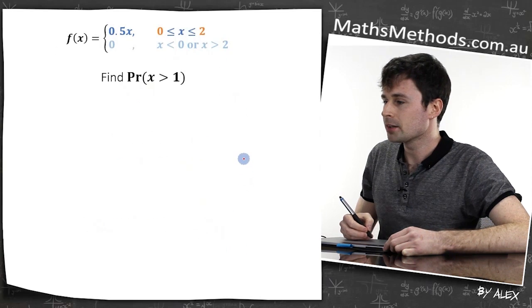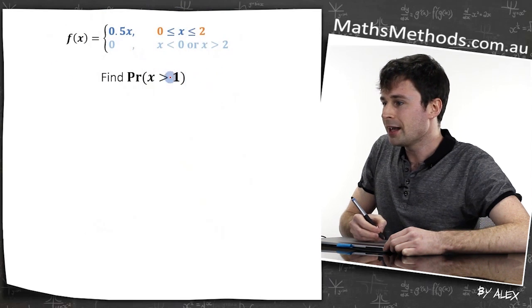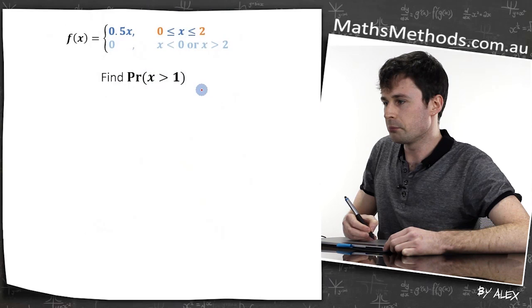Here's an example. So we've got this function here, which looks a bit strange, but if we draw it out, it wouldn't be too bad. And we've got to find the probability that X is larger than one.